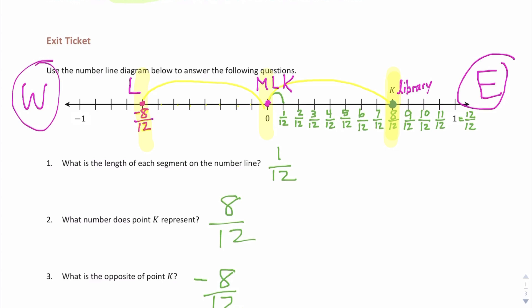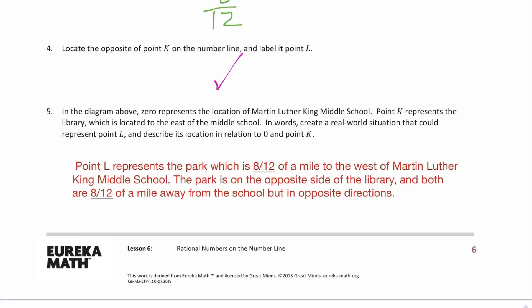Well, if the east is over here, the west is going to have to be over here. So in my story, I want to make sure I use that word west because the word east was used in the description. All right, I came up with this story. Point L represents the park, which is eight twelfths of a mile to the west of Martin Luther King Middle School. The park is on the opposite side of the library, and both are eight twelfths of a mile away from the school, but in opposite directions.